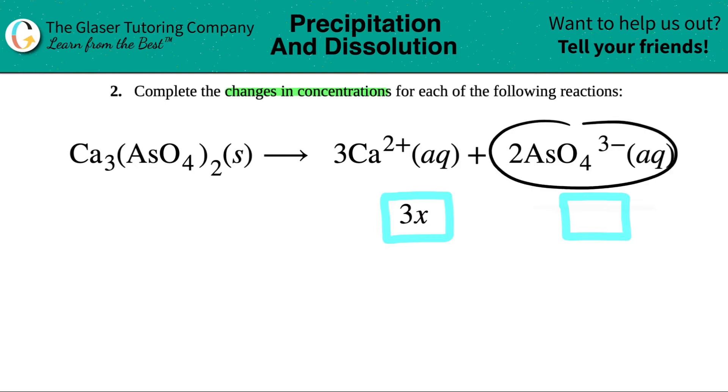Plus 2AsO4^3- minus. Now the question is, if they told us that the calcium ion is going to change as 3x, what is going to be the change for the AsO4? Well, remember any changes in concentration always goes back to the balanced equation.